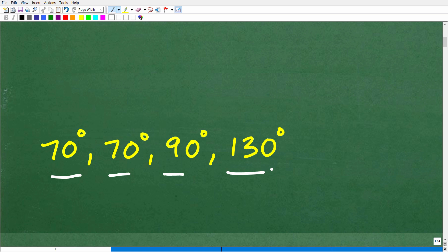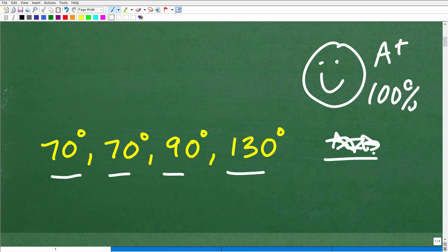Okay, so how'd you do? Well, if you got this right, let's go ahead and give you a nice little happy face, an A+, a 100%, and a few stars. So you can tell your friends and family that you know exactly what to do in order to find the angles of a quadrilateral. They'll be very impressed with that knowledge.